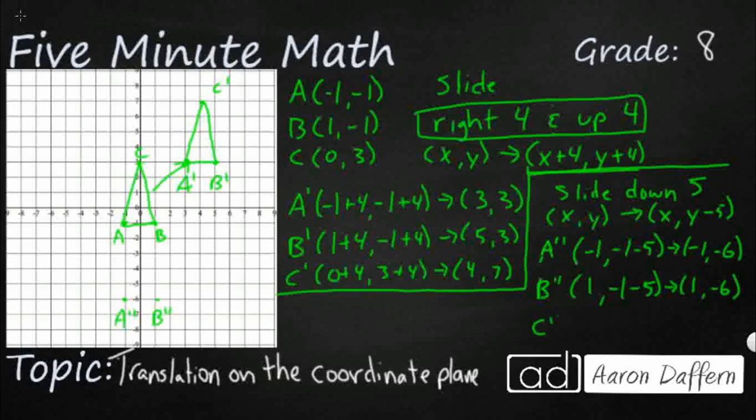And then my C double prime, it was 0, 3. I'm going to stay on that y-axis, but I'm going to take away 5. So now that's going to be 0, take away 5. That's going to be 0, negative 2. And there's my C double prime.